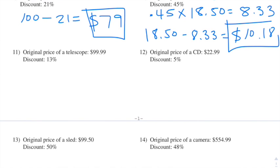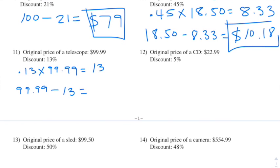Number eleven: the original price of a telescope is $99.99 and the discount is 13%. Again, 13% of 99.99 — we take $99.99 and subtract $13 from it and we end up getting $87.